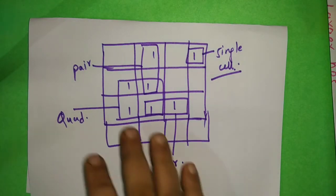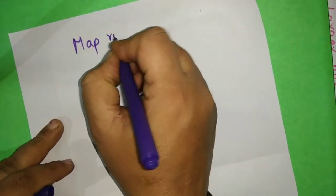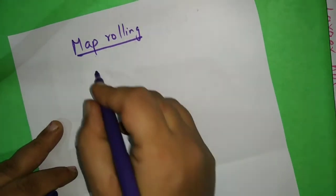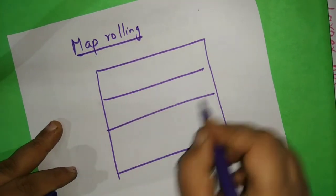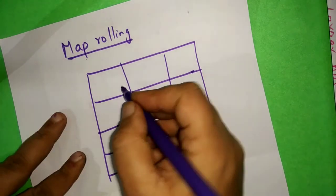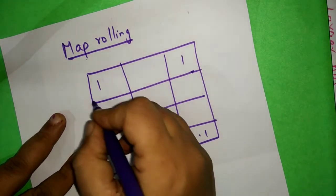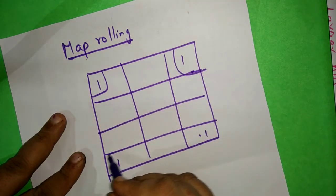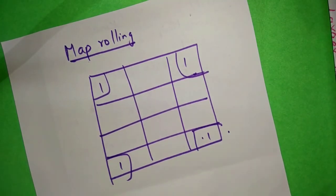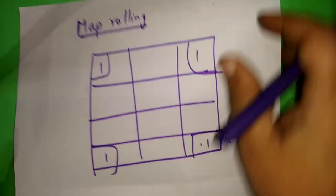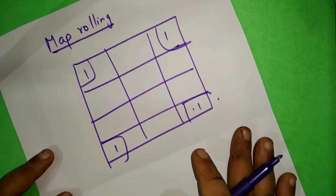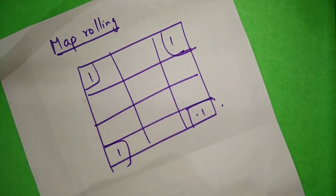Apart from that, you have something known as map rolling. In map rolling, the edges are actually paired — it is like folding the paper on both sides and imagining those four as one quad. Here I am showing you: you can see the ones are on the edges, and the paper can be folded so those edge ones form a group of four. That is known as map rolling, and it can be folded horizontally or vertically. Sometimes we have problems like this — you must not leave those edge ones ungrouped.